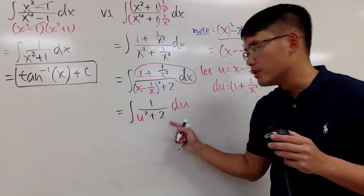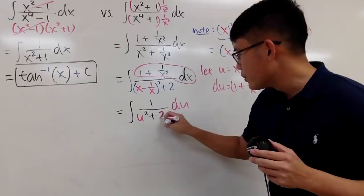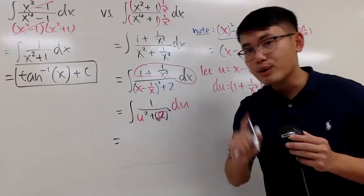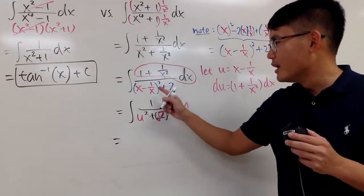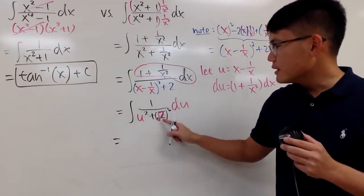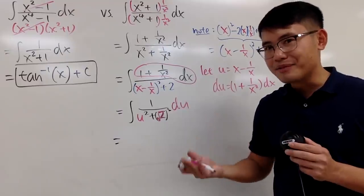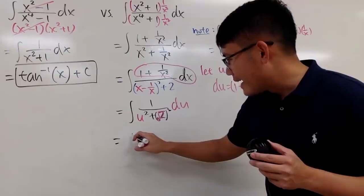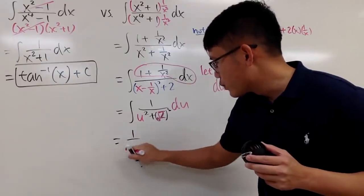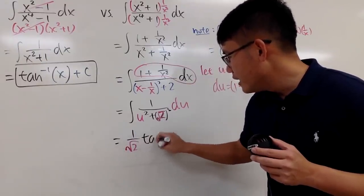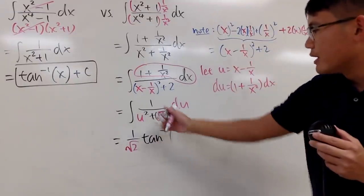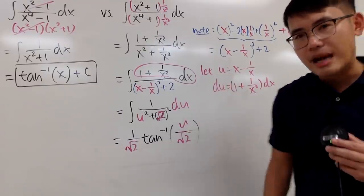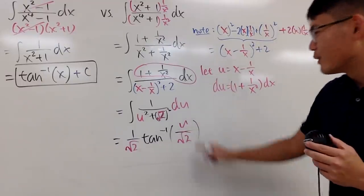For the 2, you can look at it as (√2)² because we're going to use the formula to integrate 1/(u² + (√2)²). We have to use arctangent. The result is 1/√2 times arctan(u/√2). That's the integration step. Cool, huh?